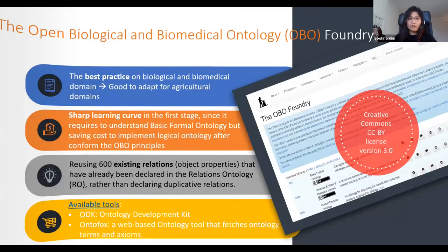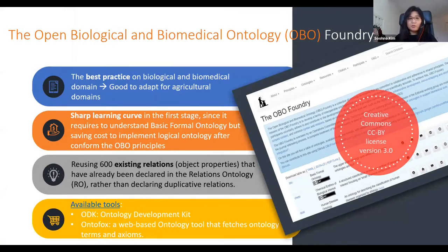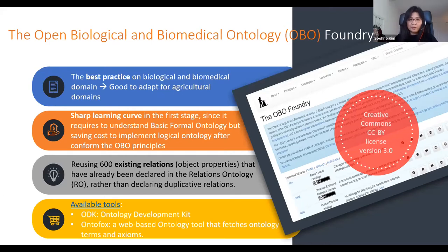Now I'd like to share my experience during building the ontology. The first thing is OBO Foundry — Open Biological and Biomedical Ontology — creates best practices for how to build ontologies in a specific domain. I think this is a good idea to adapt those best practices into our domain, agriculture and socio-economic. At the beginning there's a sharp learning curve and it's hard to understand the upper-level Basic Formal Ontology, but it takes time at the beginning and later you can save time and cost. They already have OBO Foundry principles, so we can adapt them and they will automatically check our ontology.